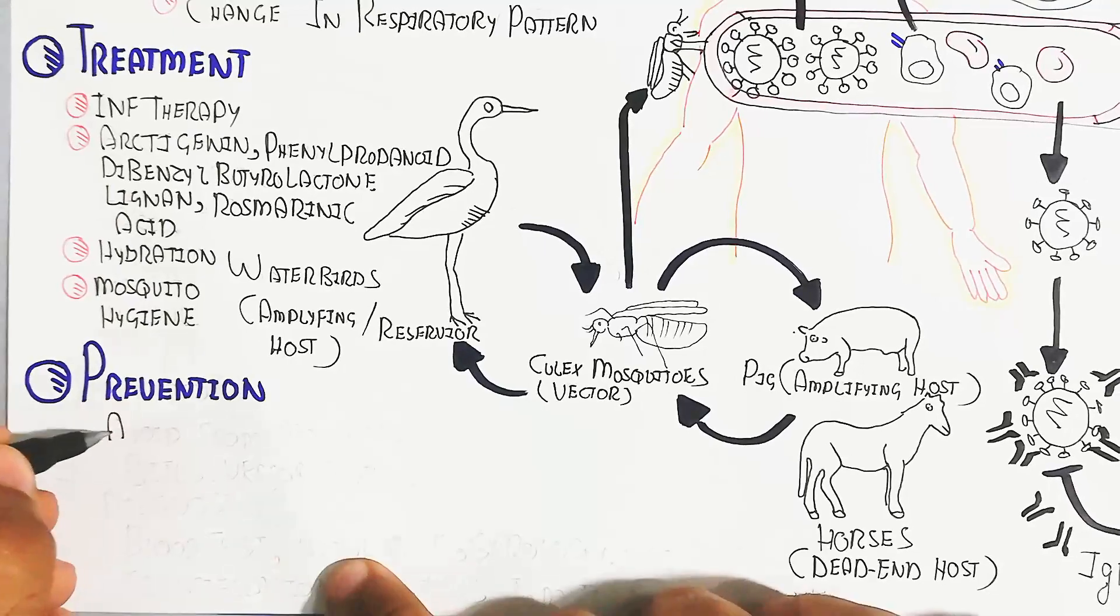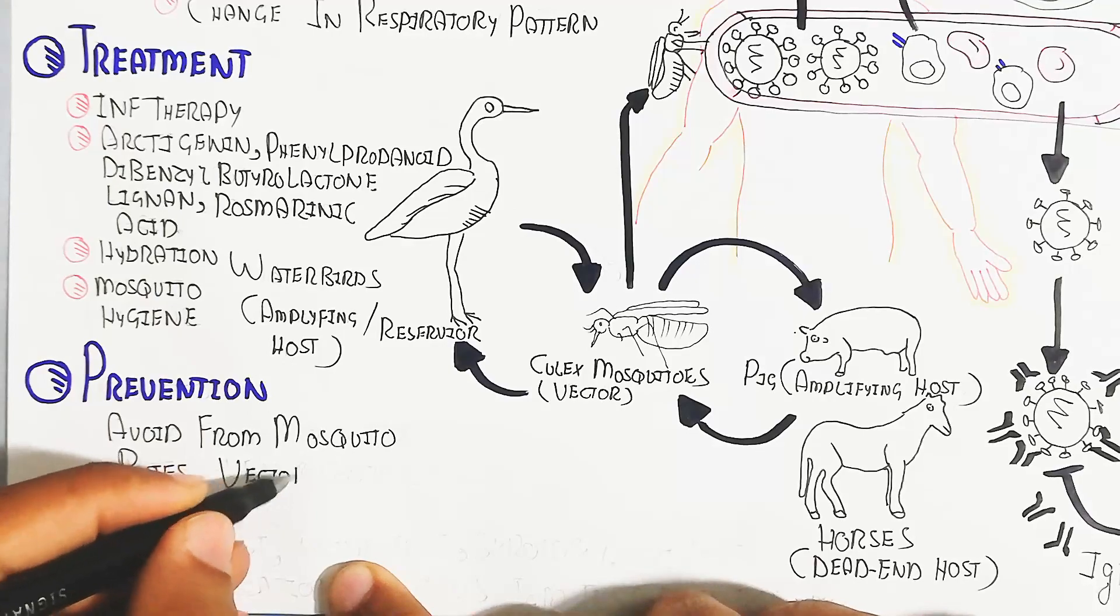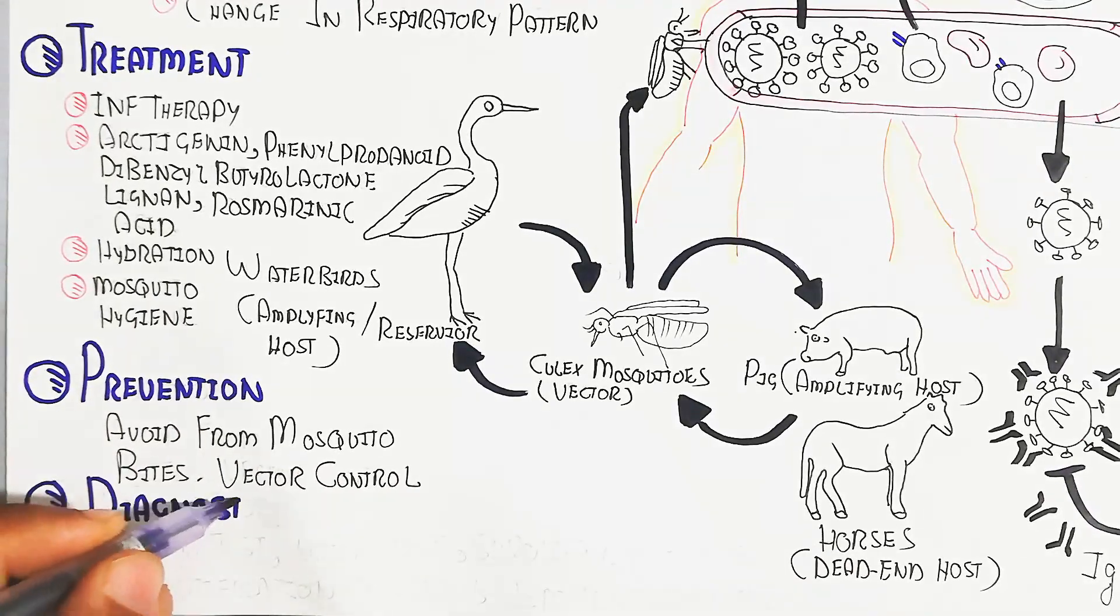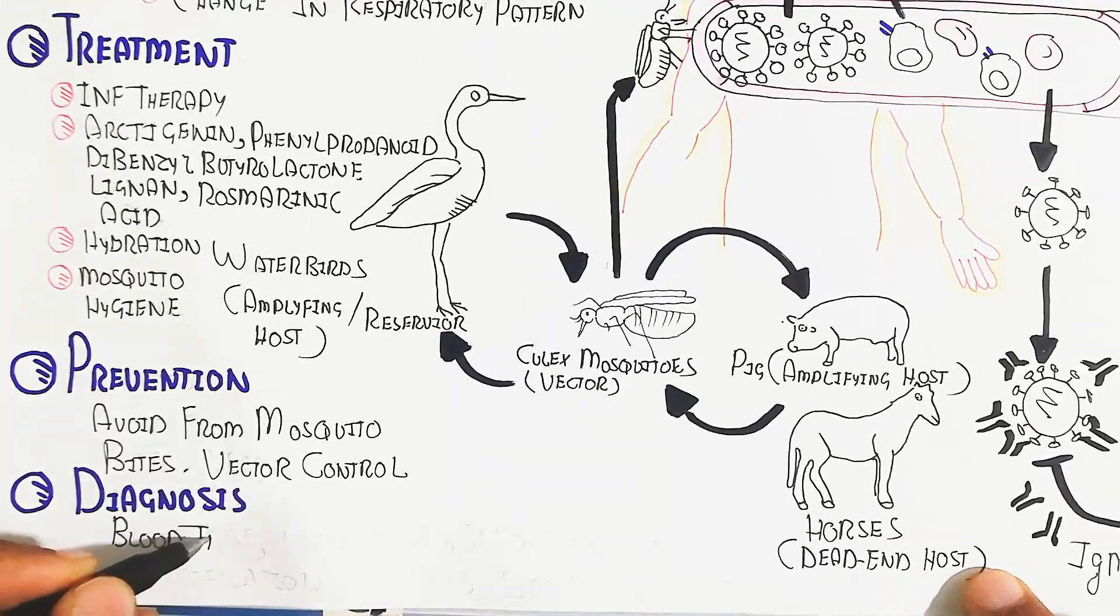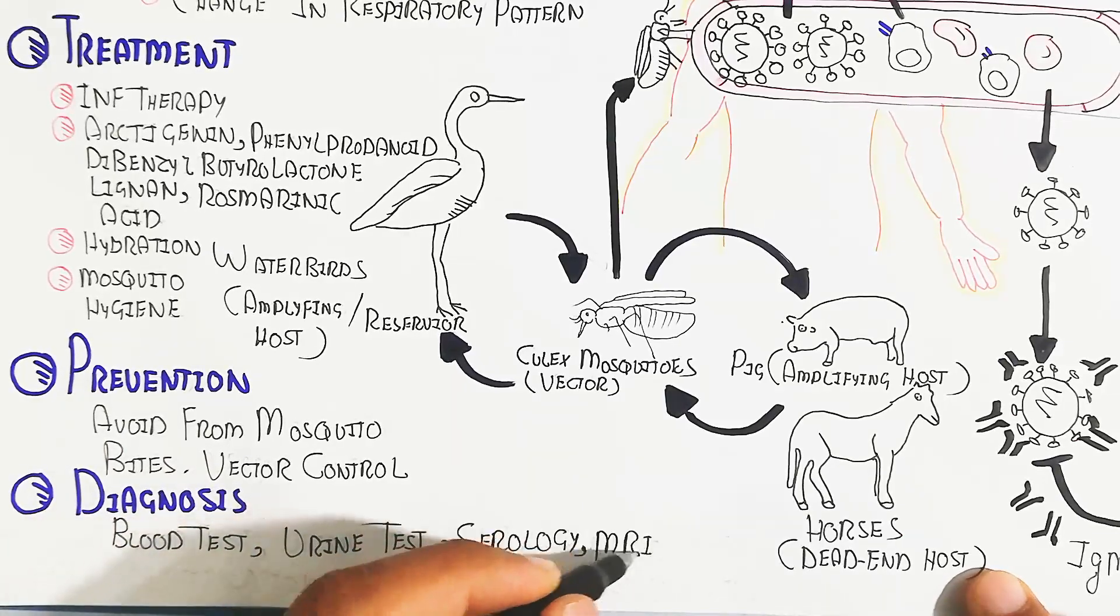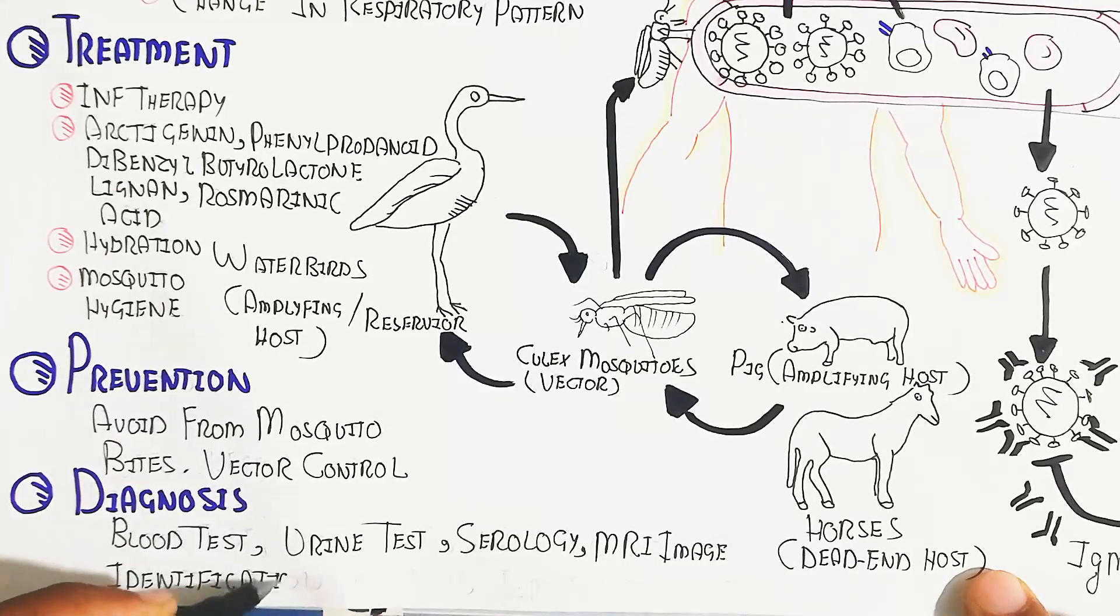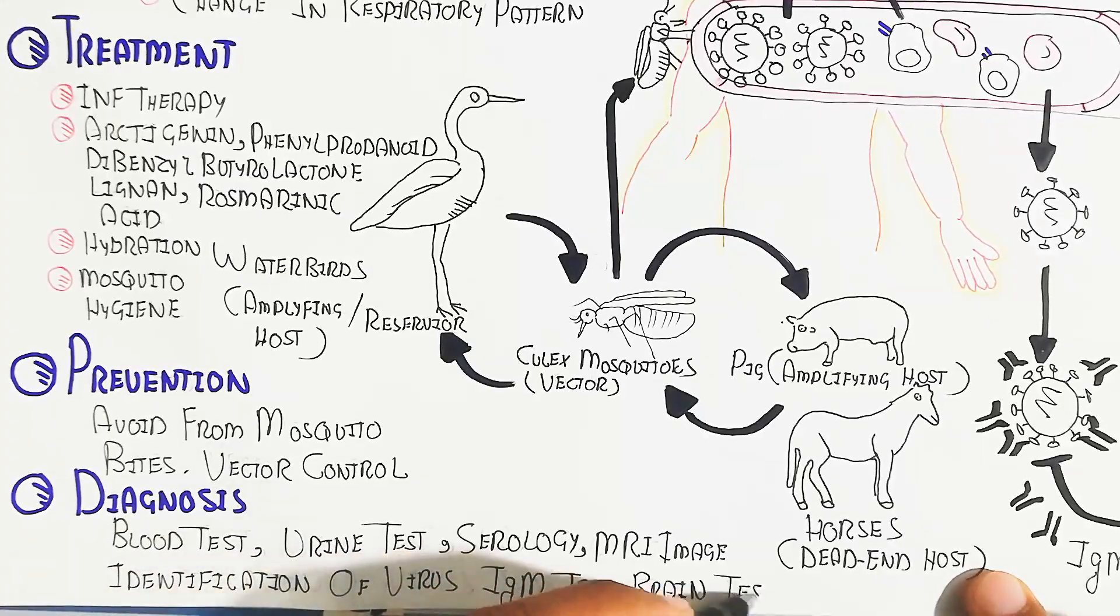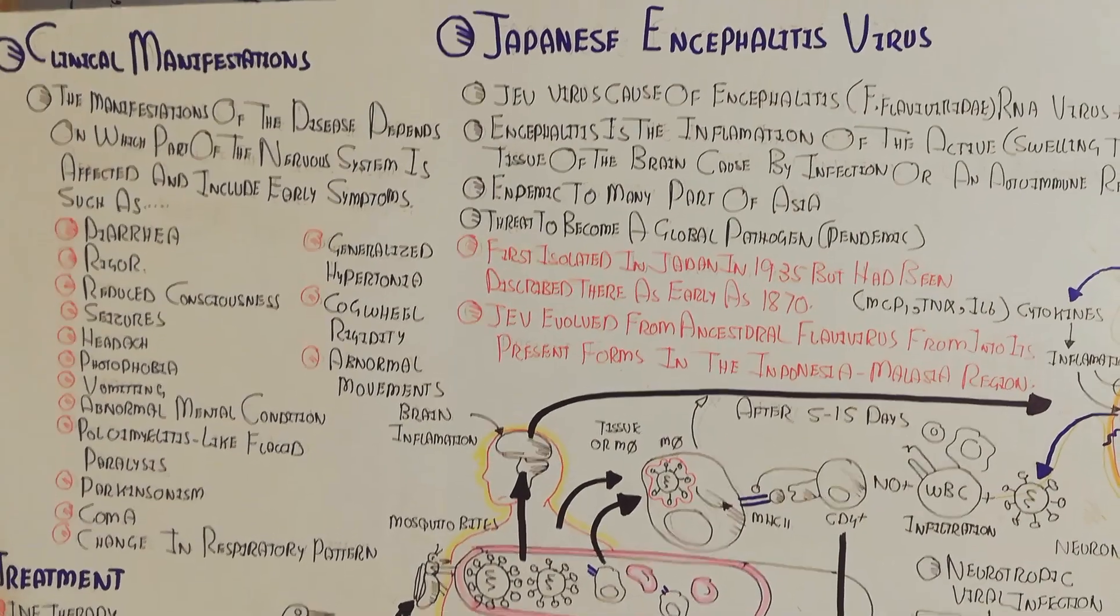Prevention includes avoiding mosquito bites and vector control. Diagnosis involves blood or urine tests for serological identification, IgM testing, and MRI imaging of the brain to identify encephalitis, as encephalitis has many causes, not only viral. Identification of the virus through immunoglobulin tests and brain tests is essential.